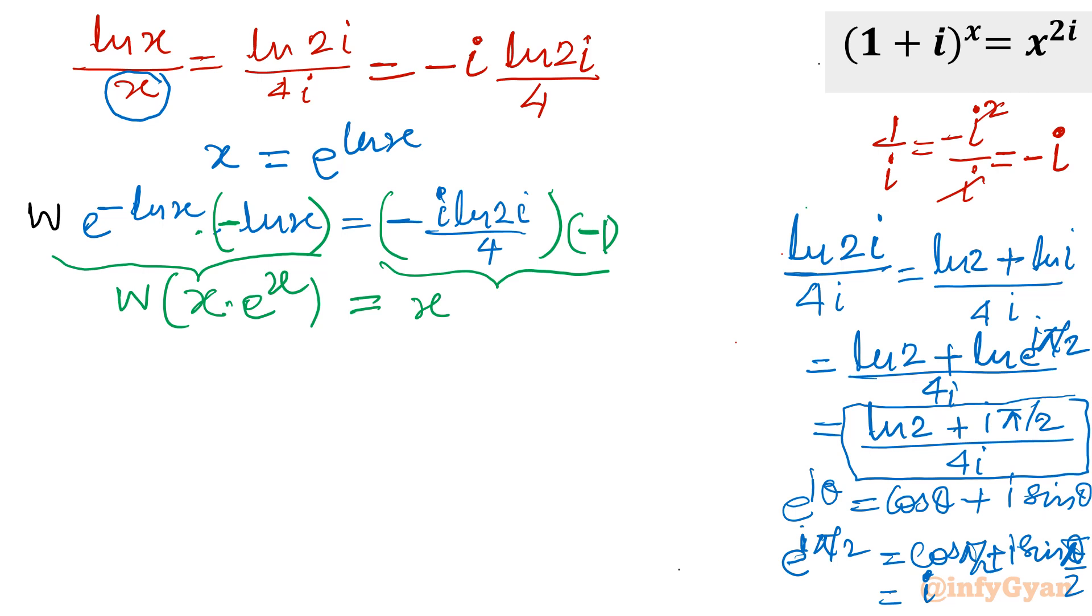Using this property, let me take Lambert W function. So I will write minus ln x in the left and right-hand side we will have Lambert W of i ln 2i over 4.